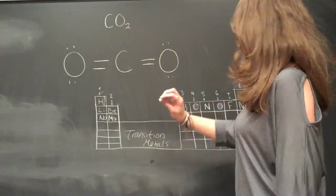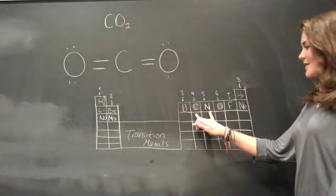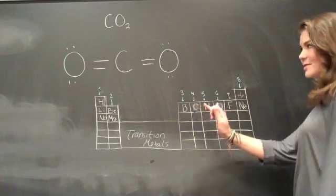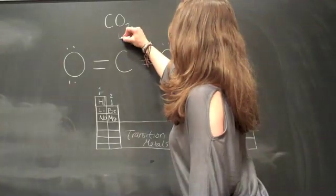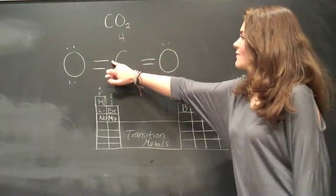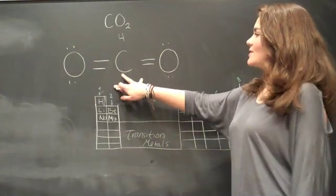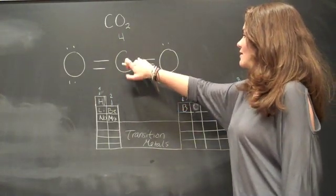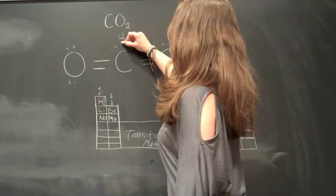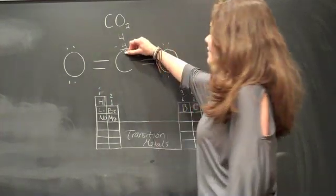So to find the formal charge for carbon, you know that carbon as an atom on its own has four valence electrons. You get that information from the periodic table. And then you can see that it has four valence electrons when bonded to the two oxygen, because each of the double bonds counts as one electron. So you subtract that. And the formal charge for carbon in this compound is zero.